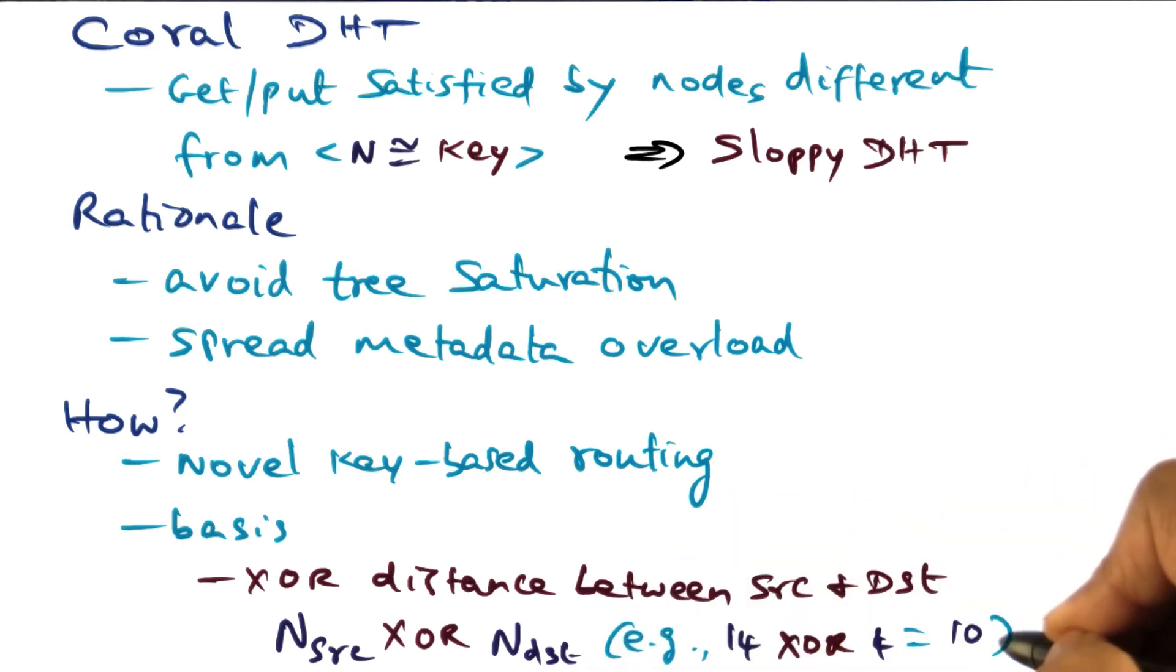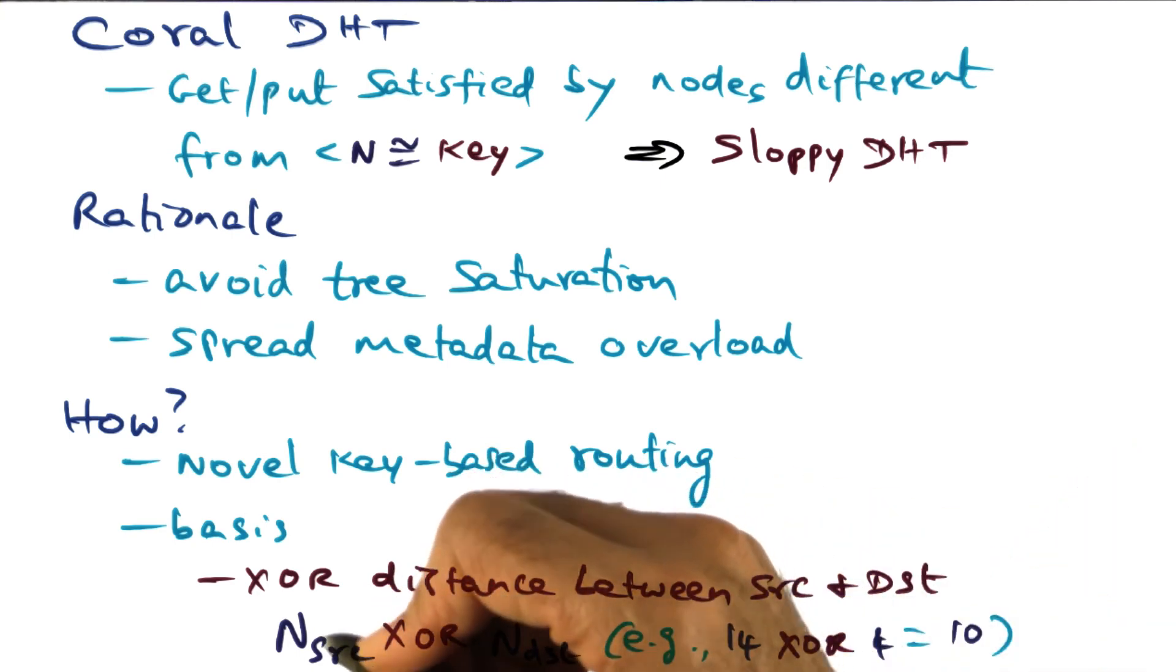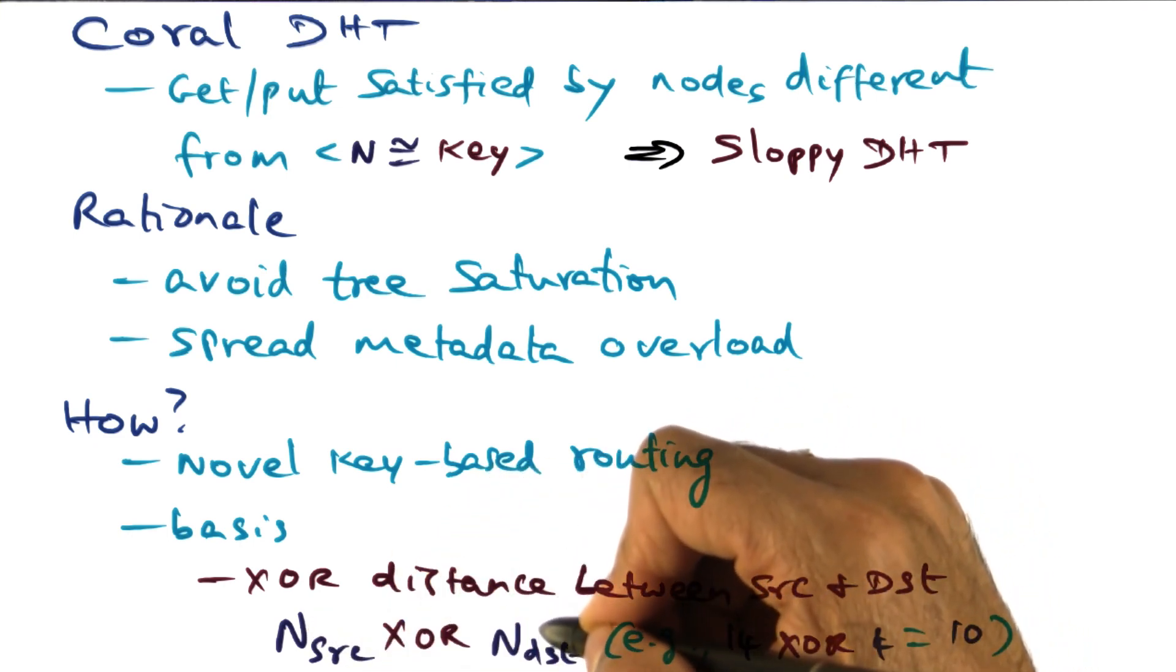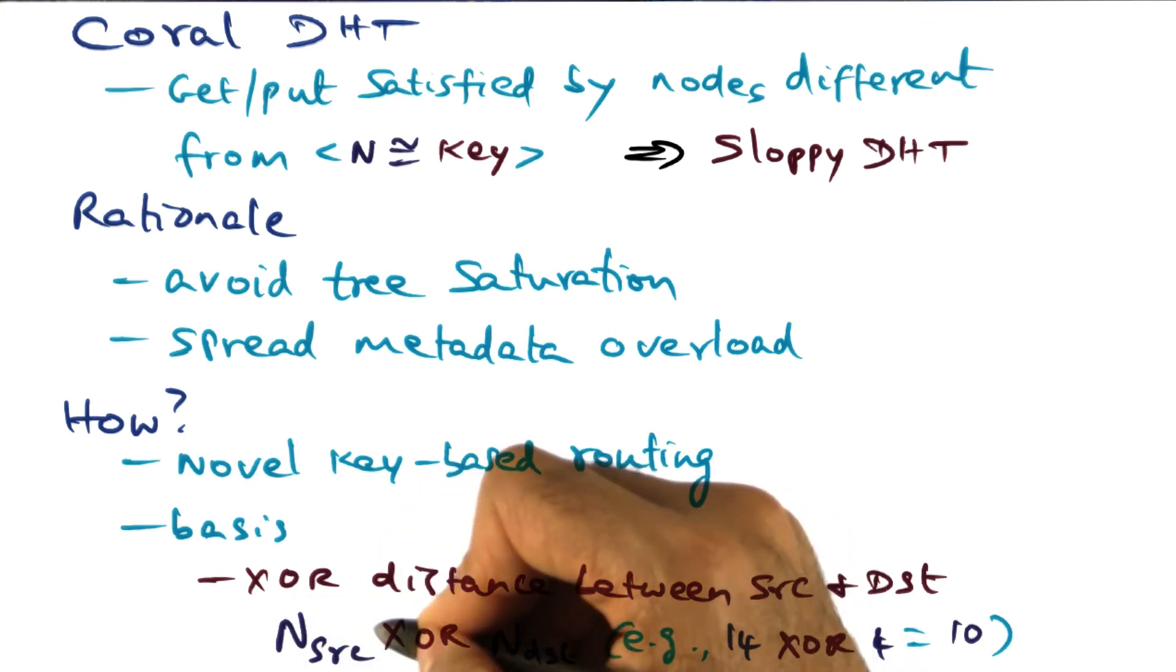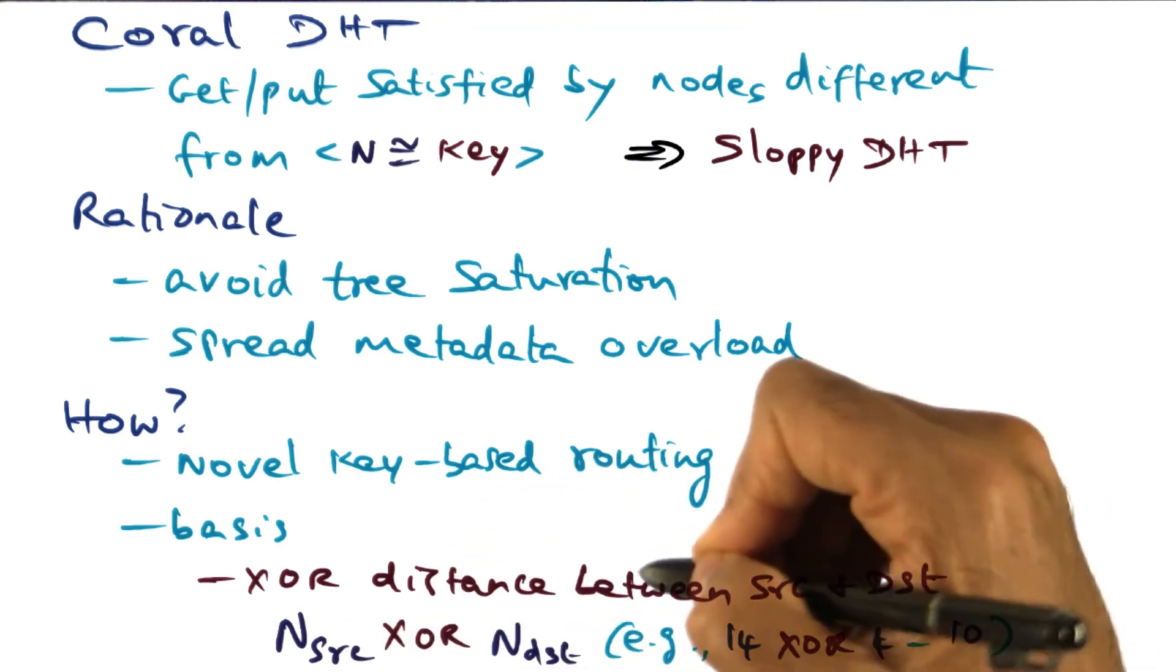The bigger the XOR value, the larger the distance between the source and the destination in the application namespace. And since we are dealing with fairly big numbers here, the node ID could be a 160-bit quantity, and that is the reason we want to use some simple operation that will get us the distance. XOR is a very quick operation to implement to get the distance between source and destination.